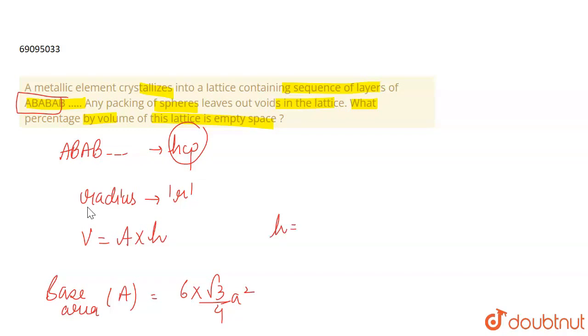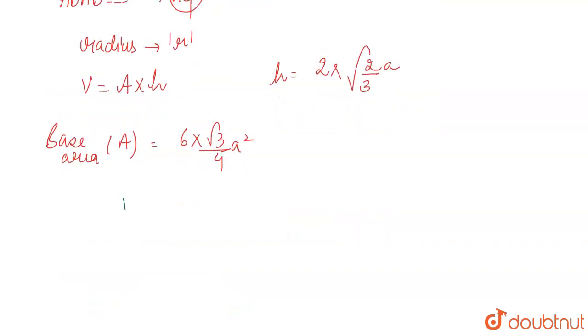And what will your height be? That will be 2 into the distance between the two closed packed layers. And the distance between the two closed packed layers is under root 2 by 3 a. So this is your height.